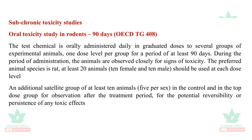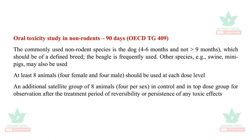Subchronic toxicity studies are for 90 days. Oral toxicity study in rodents includes 20 animals — 10 female and 10 male — with an additional satellite group of 10 animals, five per gender, used to record the potential reversibility or persistence of any toxic effects after the 90 days. Oral toxicity study in non-rodents uses guideline 409; usually beagles are used, though swine and mini pigs are also acceptable. At least eight animals — four per gender — are used, with an additional satellite group of eight animals allowed.